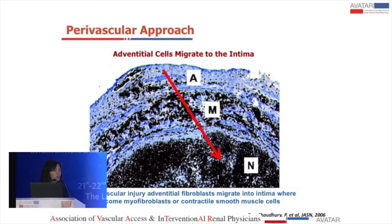One of the key principles is that with endovascular and perivascular approaches, we can take advantage of the drug concentration gradient and the natural movement of the cells. Here we have a picture of a blood vessel — this is the adventitia, the outside of the vessel, and the lumen is the inside. When vascular injury occurs, cells move from the adventitia to the media to the intima to become myofibroblasts or contractile smooth muscle cells. If we apply a drug on the outside, you have a high concentration gradient there, and it goes down its concentration gradient along with the natural progression of those cells, hopefully limiting neointimal hyperplasia.